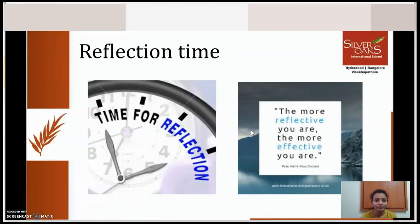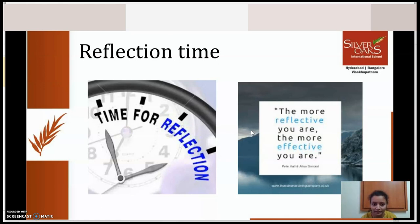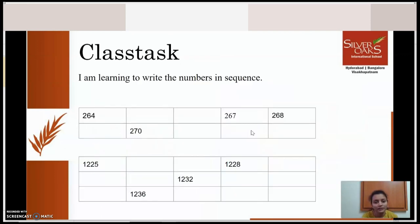Now it's time for reflection. What did you learn in today's class? Close your eyes and think. I learned about cardinal numbers and also understood the difference between digit and number. Now it's time for class task. I am learning to write numbers in sequence. You know how to write numbers in sequence — so in this table, some numbers are missing.